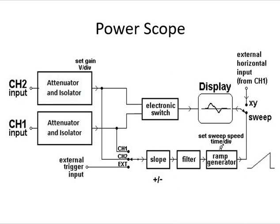The attenuator is a general term referring to any reduction in the strength of a signal. The isolator makes the difference between input and output signals, or in a simple way, it isolates the two signals. These are the main blocks of the power scope. In short, inputs are provided at channel 1 and channel 2 to the attenuator and isolator block, then passed to the electronic switch, which displays the signal.